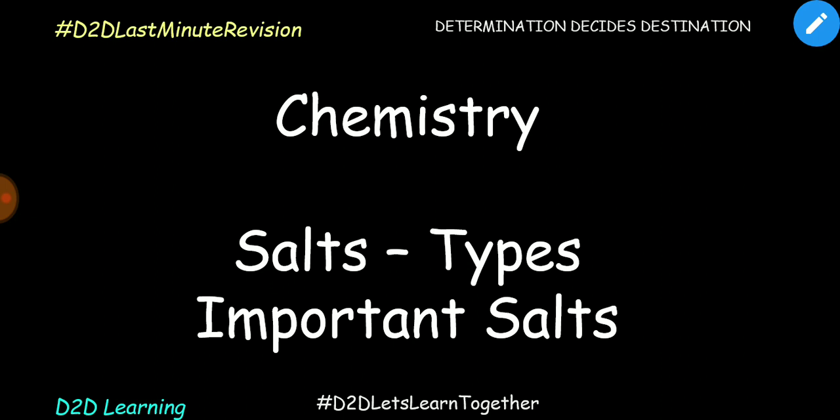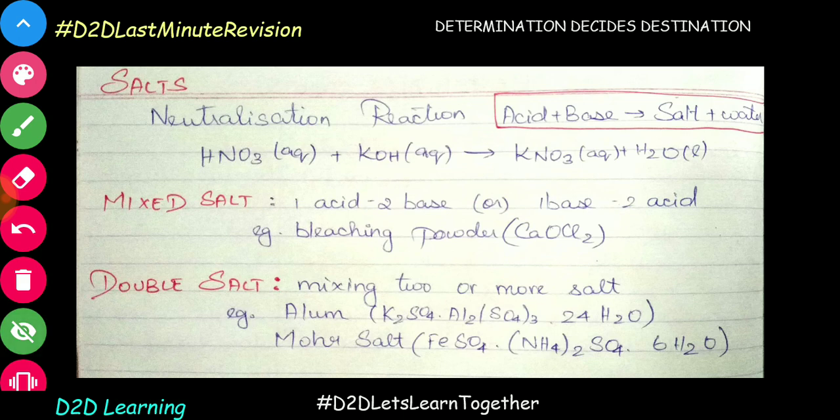Usually in all competitive exams, they call it a common name, a chemical name, or call it by its usage. Important salts have different names, so we will talk about those names. We will talk about acid and base concepts and we will talk about salt. Acid plus base gives salt plus water — that process is neutralization.